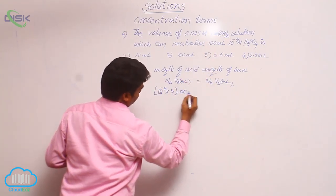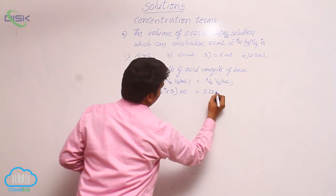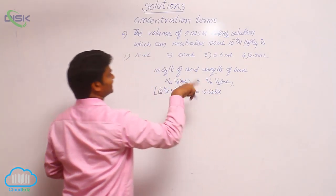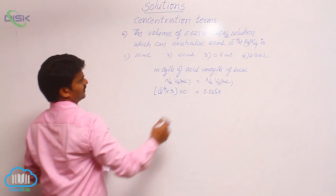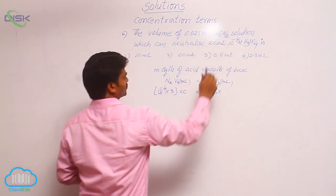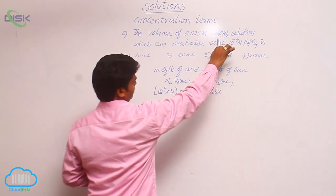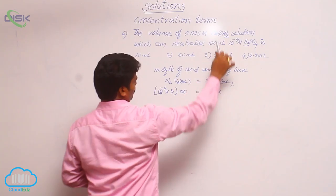What is the volume? 100, that is right. Normality of acid not given directly. That is why here also 0.025 into its n factor. For calcium hydroxide what is the n factor? N factor is 2. Why? It is a diacidic base, that means acidity 2, so n factor 2.